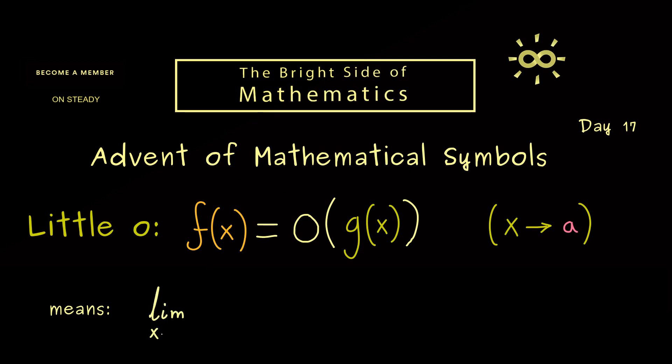So we have limit x goes to a, and then we simply consider the ratio of f to g. Now usually for consistency reasons, one takes the absolute value of this ratio, and then finally in the limit this should go to 0. So you see this equality tells us that the function g dominates the function f in this limit process.